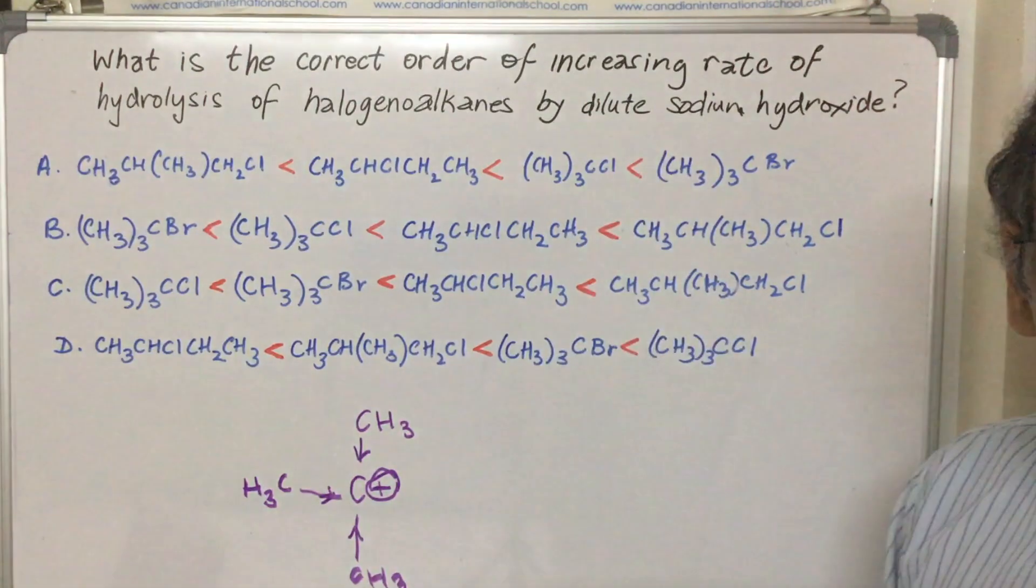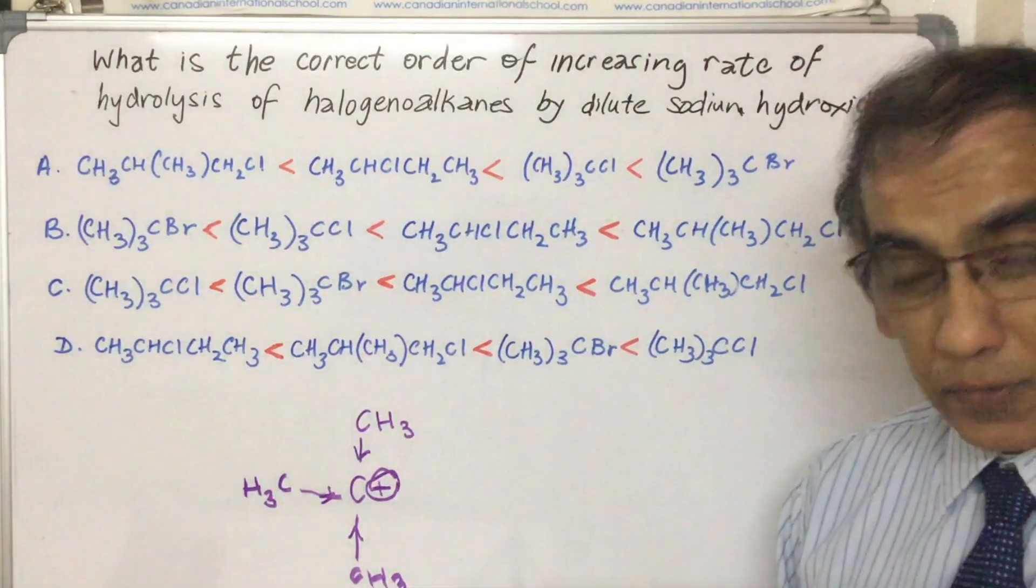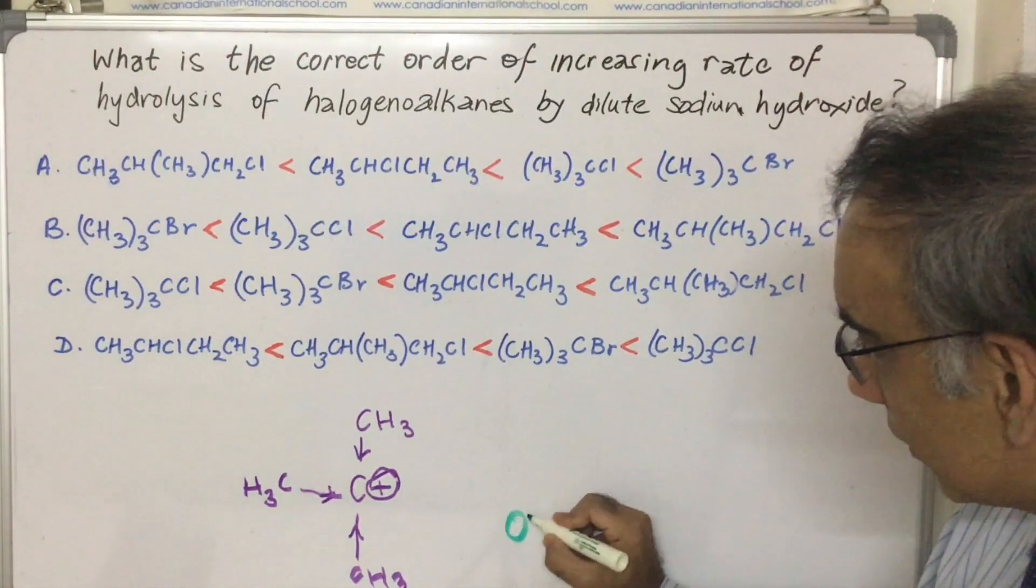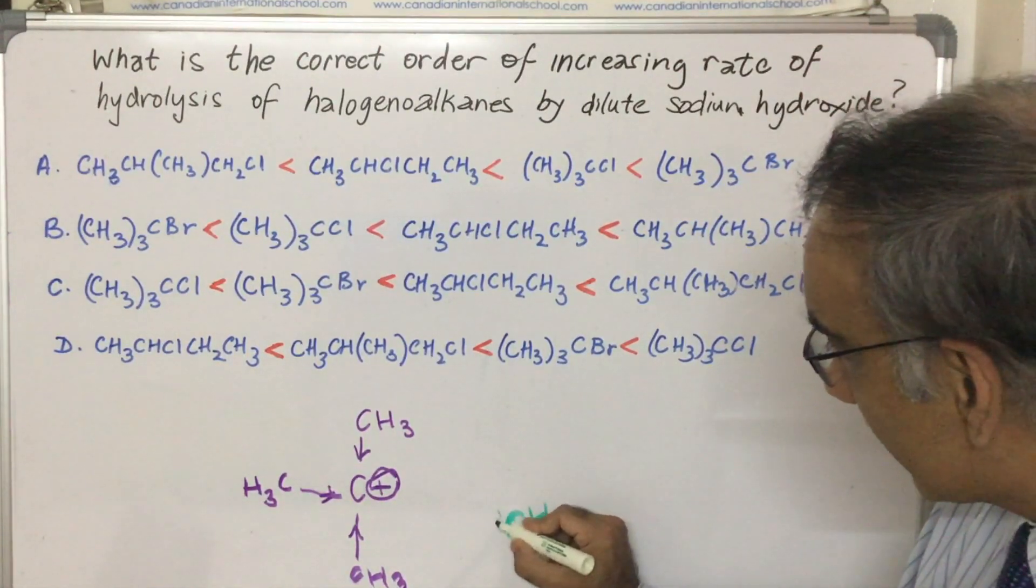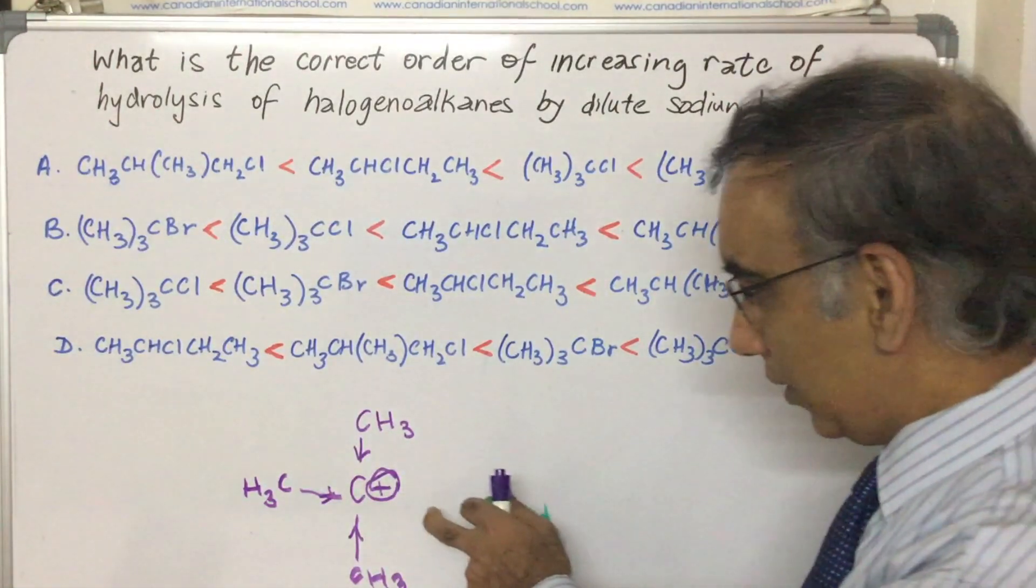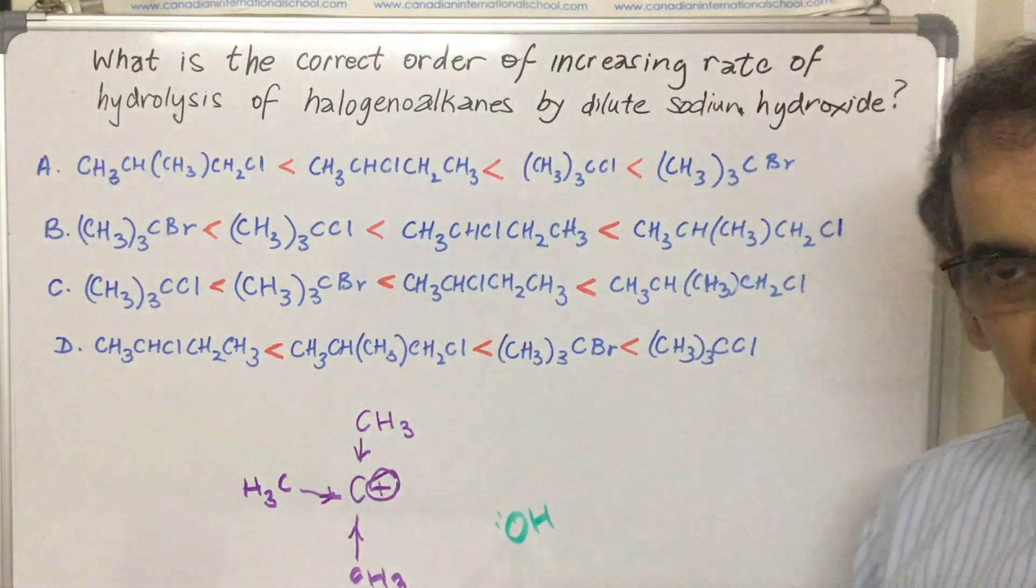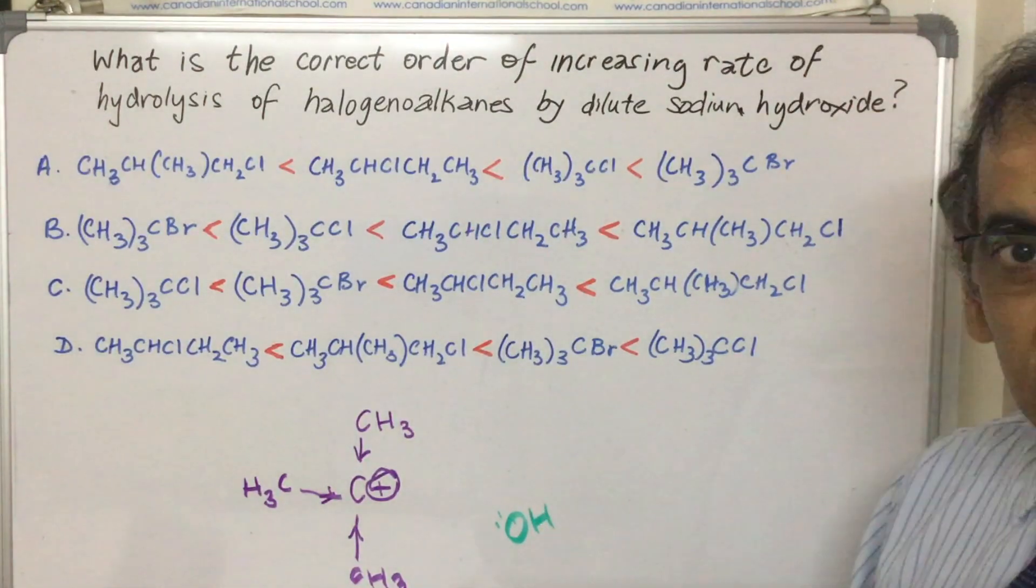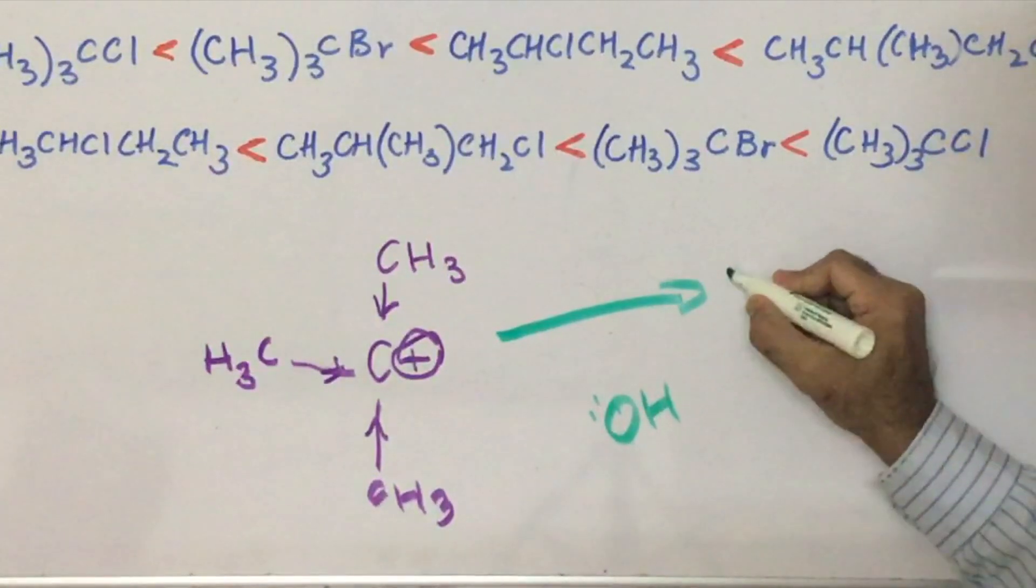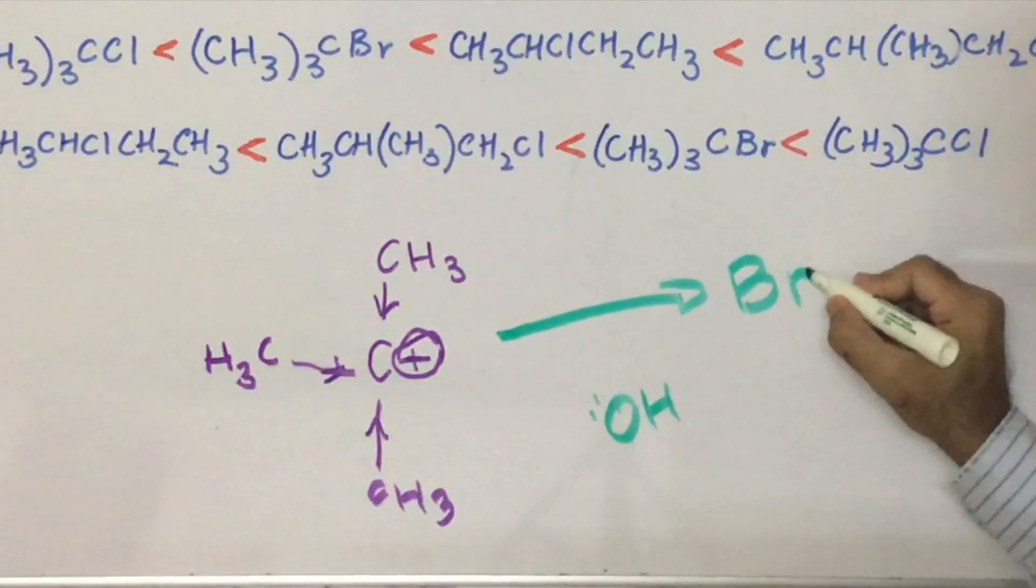In sodium hydroxide what you will have is the nucleophile with its lone pair of electrons seeking to come in and become attracted to this positive center and to have a nucleophilic substitution. Of course, as the halogen group exits, and that halogen group could be Br- or it could be Cl-.